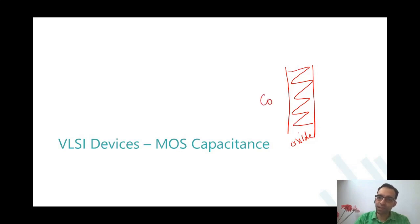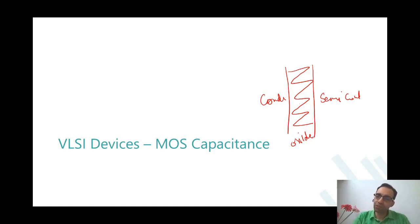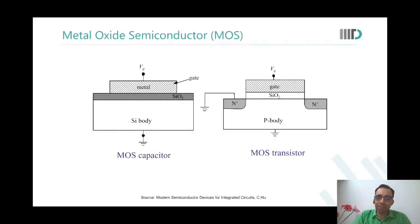Metal is simply a conducting plate. Semiconductor is semiconducting, but semiconducting means it can conduct. So it means that there is a dielectric oxide between two conducting plates, and that clearly means it's a capacitance. MOS by the name itself represents the capacitance. So the metal gate, silicon dioxide, and then the body — this becomes a MOS capacitor.